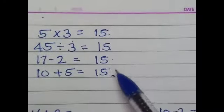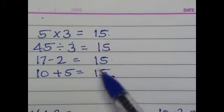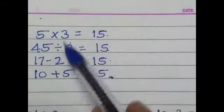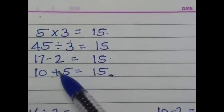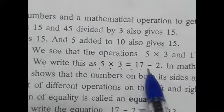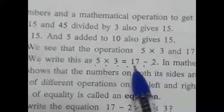Therefore, mathematical operation means how many times the answer is - but the answer is same, here is 15, 15, 15, 15, and the numbers are different. The operation is different. Students, we write this as 5 multiplied by 3 is equal to 17, 2 subtracted from 17.